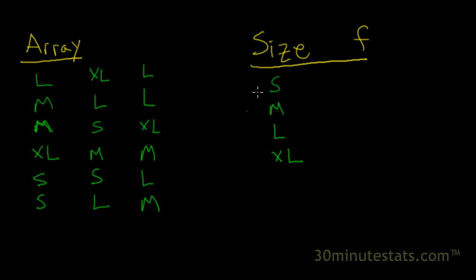And we can go through and count up for each one of these. Let's start with the smalls and see how many smalls there are. So one, two, three, four, and that's it. We've got a frequency of four smalls.